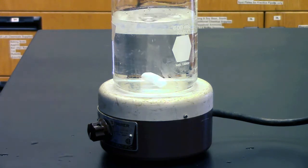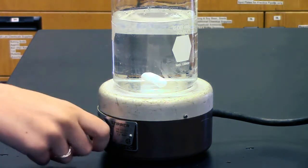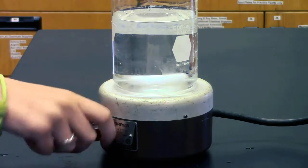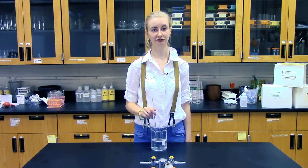The stir bar is magnetic. Inside the stir plate is another magnetic bar that spins. Once you turn it on, it forces the stir bar to rotate. It's a really useful way to stir solutions in the lab without having to stir by hand.